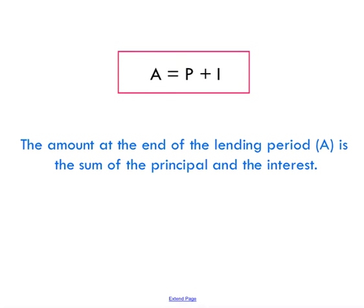Another formula we're going to look at here is the amount formula. This tells us the amount of money that we have at the end of a lending period, and that's just going to be equal to however much we put in plus the interest that we earned.